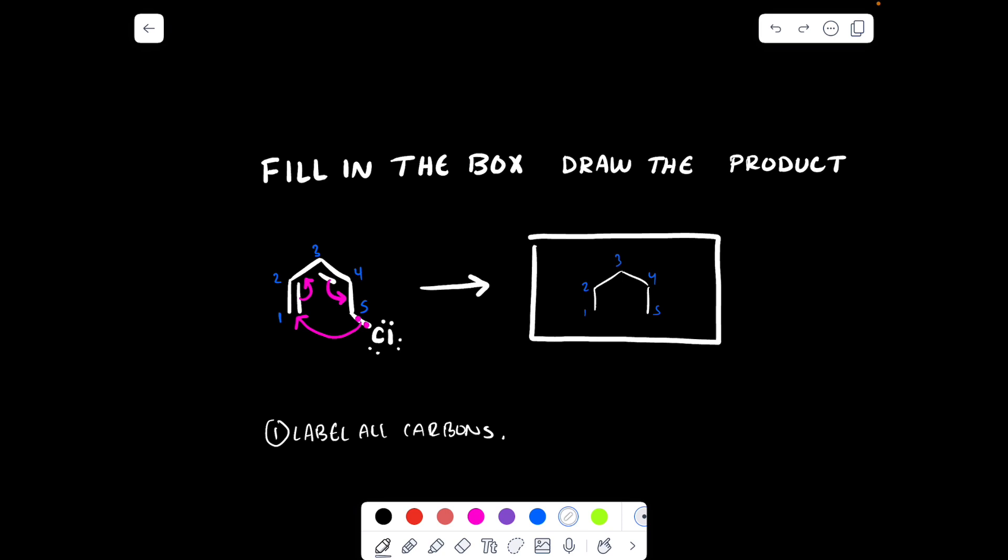The back of the arrow is where they're coming from, so the pink arrow, that bond ends up right there. Yeah, I'll make these different colors. Okay, so then the pi bond, the purple pi bond between three and four, where is its head of the arrow? Well, it goes between four and five.